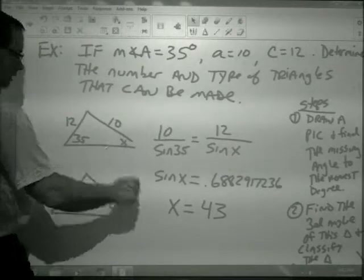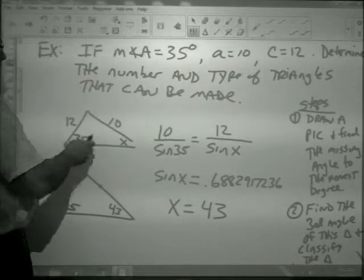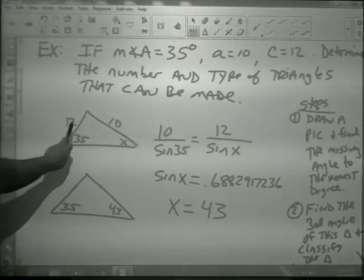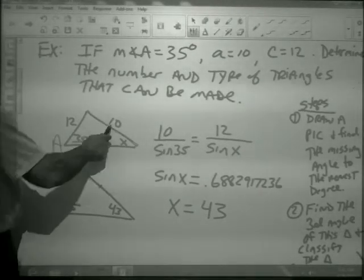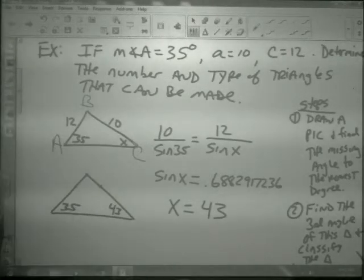So, I've got to draw myself a picture. So, here's my picture. Notice, I didn't connect this. I guess I could, but I don't know what this angle is going to be or how long this is. A is 35. So, I'll put A here. Little a is 10. C is 12. Put B here.